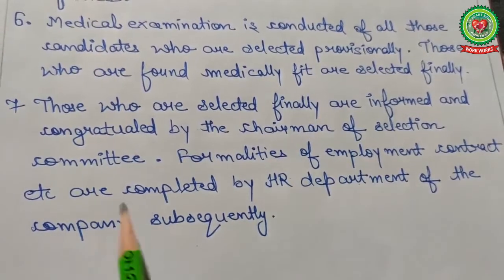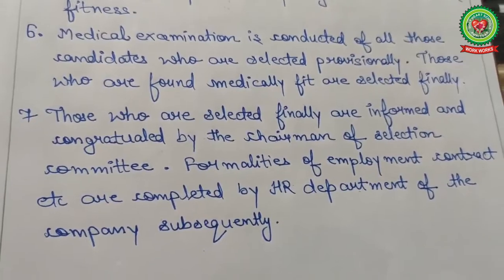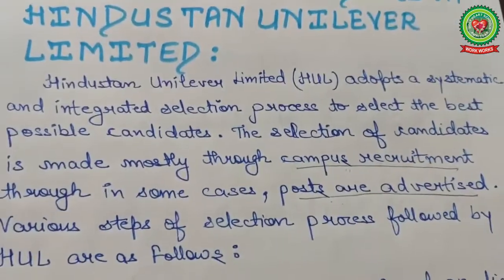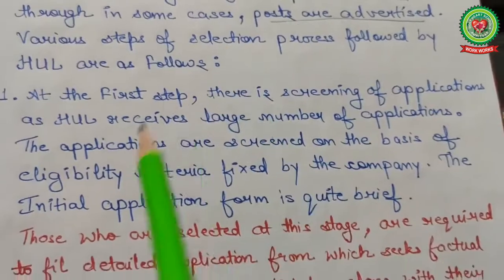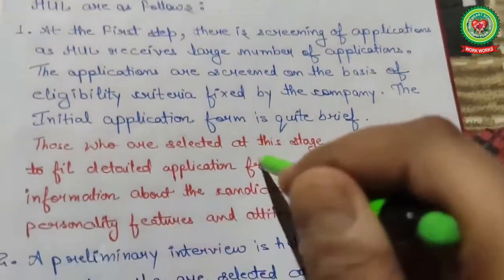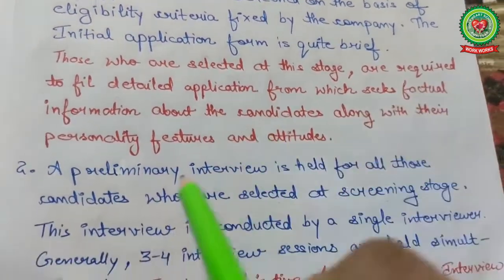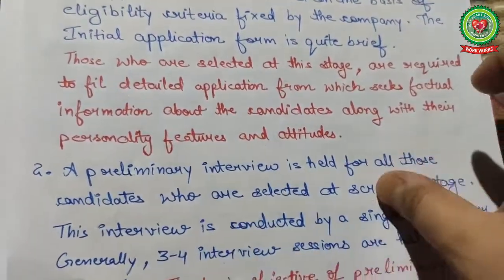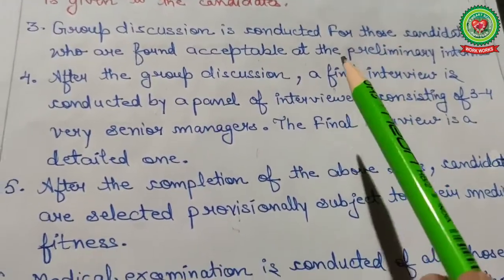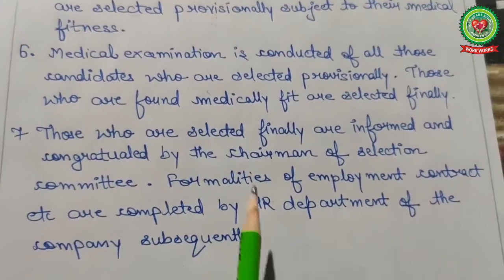Step six is the medical examination — conducted for all provisionally selected candidates. Those who are found medically fit are finally selected. Step seven — those who are finally selected are informed and congratulated by the chairman of the selection committee. Formalities of the employment contract are completed by the HR department of the company.